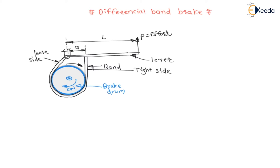We have calculated tight side tension and loose side tension. Tight side tension is P1 and loose side tension is P2. These tensions are related by: tight side tension divided by loose side tension equals e to the power μθ, where μ is the coefficient of friction between the brake drum and band, and θ is the angle of contact of the brake drum with the band.